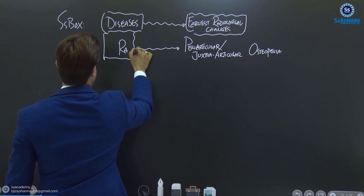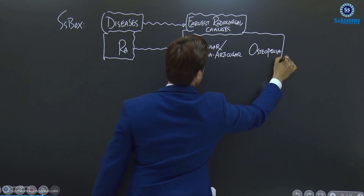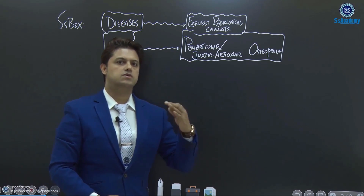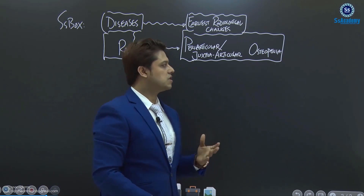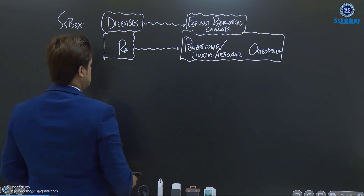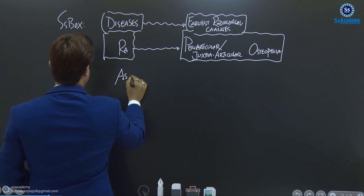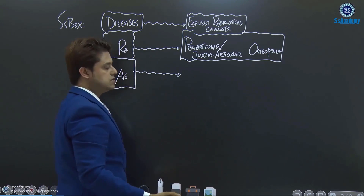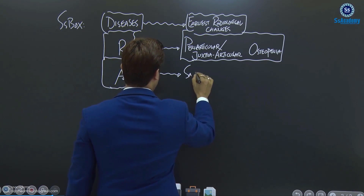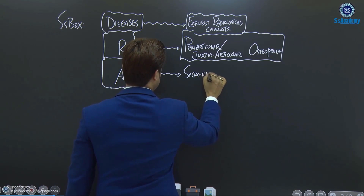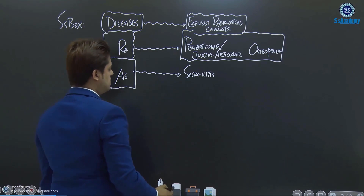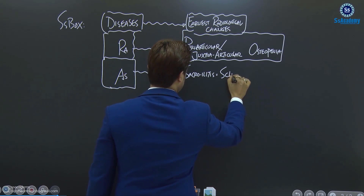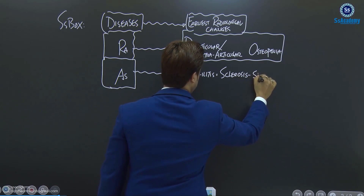So you can write down the way I write it. Periarticular or juxtaarticular — it means near to the articular surface — there will be osteopenia. Osteopenia is the most important early radiological change of rheumatoid arthritis. In contrast, if you write down ankylosing spondylitis, you will see the earliest radiological change is sacroiliitis, which means sclerosis of the SI joints.